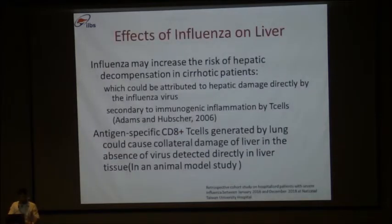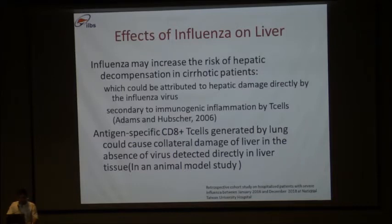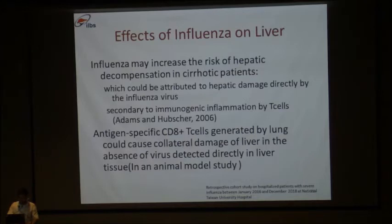Regarding effects of influenza on the liver: influenza viruses affect not just the lungs but also the liver. Influenza may increase the risk of hepatic decompensation in cirrhotic patients, attributed to direct hepatic damage by the influenza virus, secondary immunogenic inflammation by T-cells — bystander killing — and antigen-specific CD8 T-cells generated by the lung causing collateral damage to the liver in the absence of virus detected directly in the liver. Certain medications used to treat viral pneumonia can also cause liver injury.